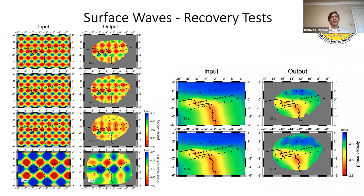These are recovery tests to give you some confidence that the surface wave imaging was fairly robust. In general we recovered checkers pretty well, and the synthetic structure for the mid-ocean ridge was recovered pretty well too.